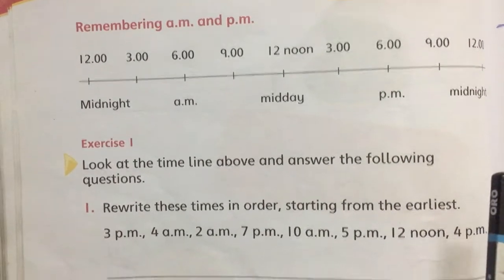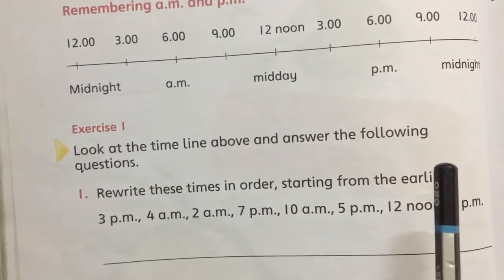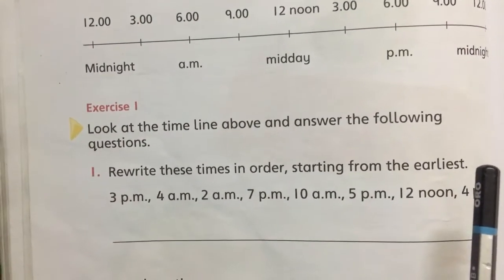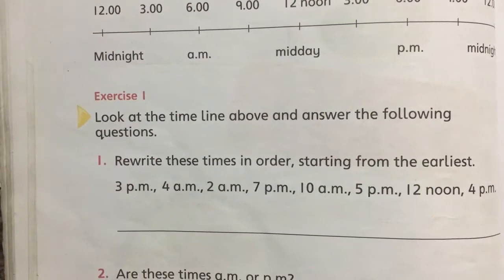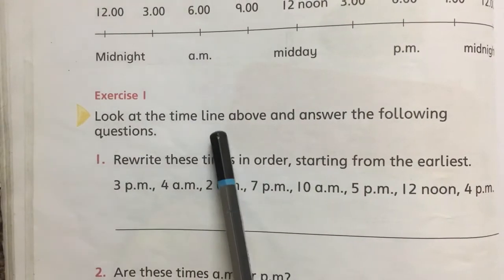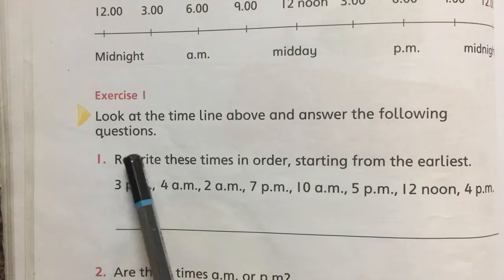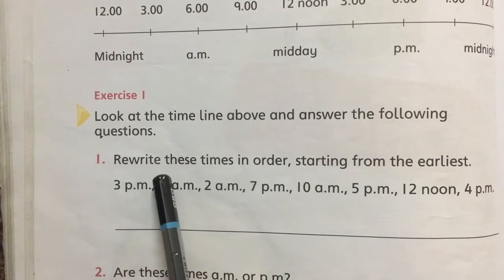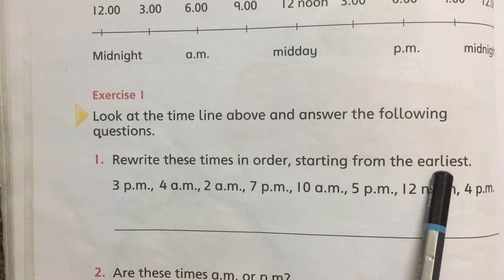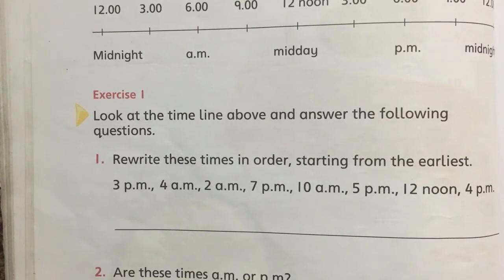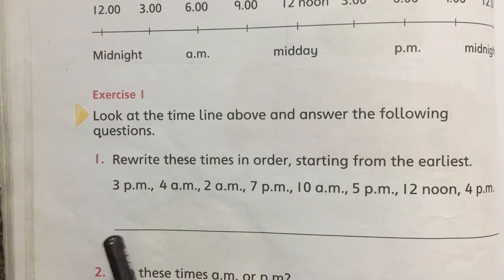Here is Exercise Number 1: look at the timeline above and answer the following questions. Rewrite these times in order starting from the earliest. You have to start from the first time and write all the times in order.